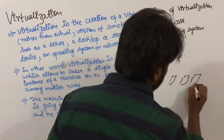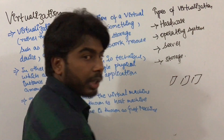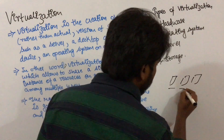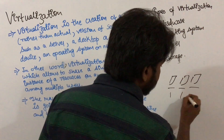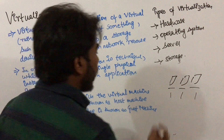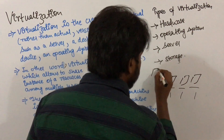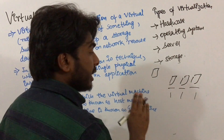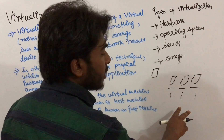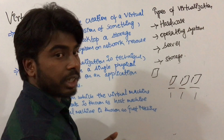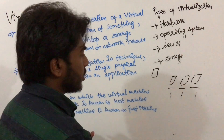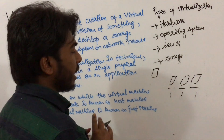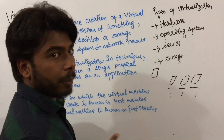Suppose an IT company has three branches — product, sales, and marketing — and they have a single server. Each branch wants their own separate server. Then the company has two options.